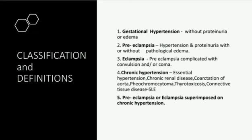Number 2 is preeclampsia — hypertension and significant proteinuria with or without pathological edema. Number 3 is eclampsia — preeclampsia complicated with convulsions and/or coma.